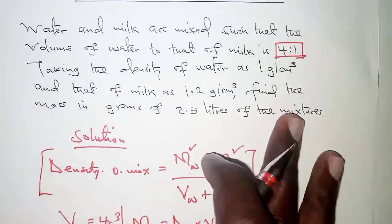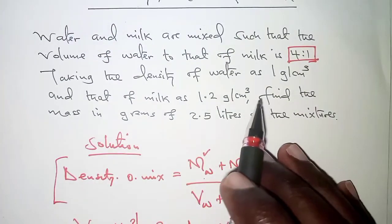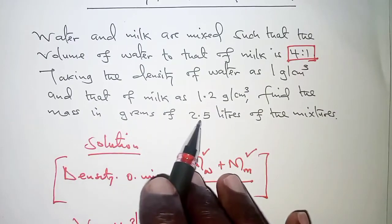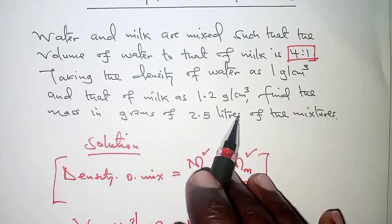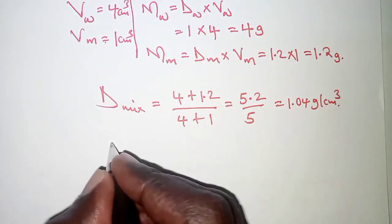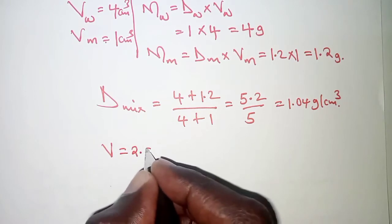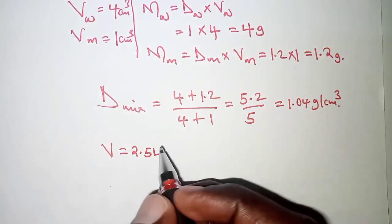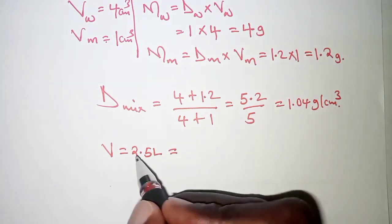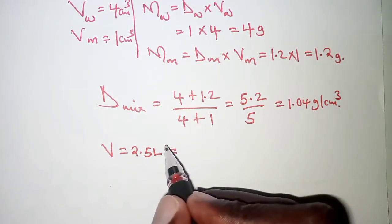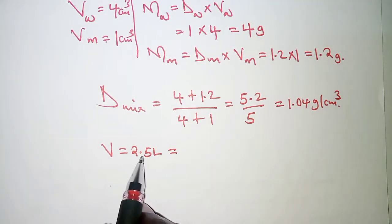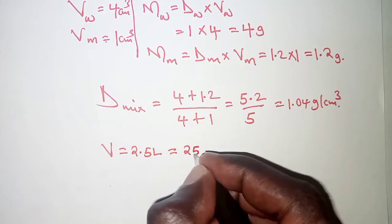That is not the final answer but it leads us to finding the mass of 2.5 liters of the mixture. The volume given is 2.5 liters, and we need to convert this into cubic centimeters. We know that 1000 cubic centimeters is equivalent to 1 liter, so 2.5 liters converts to 2500 cubic centimeters.